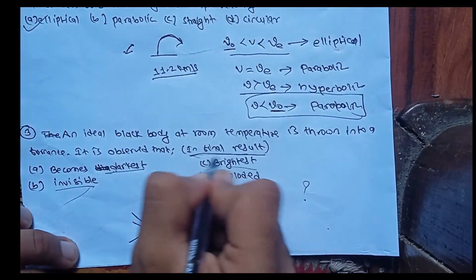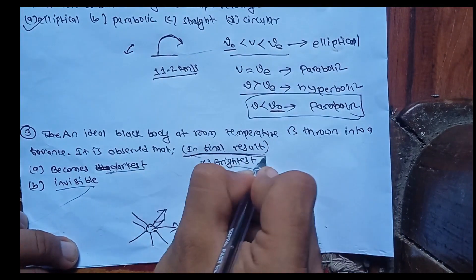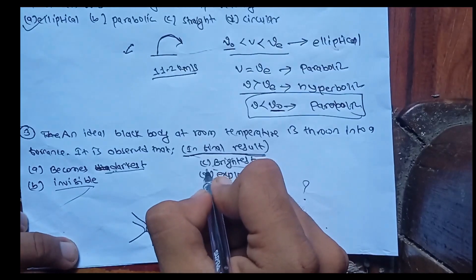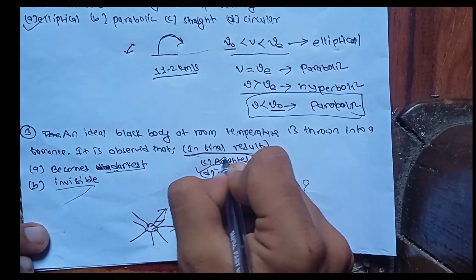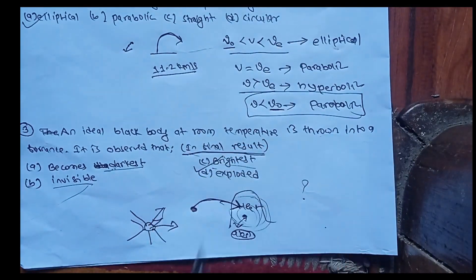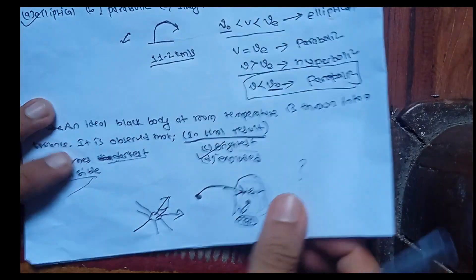The brightest ones in the furnace — the answer is option C. The black body, once in thermal equilibrium, appears brightest among the objects inside the furnace.